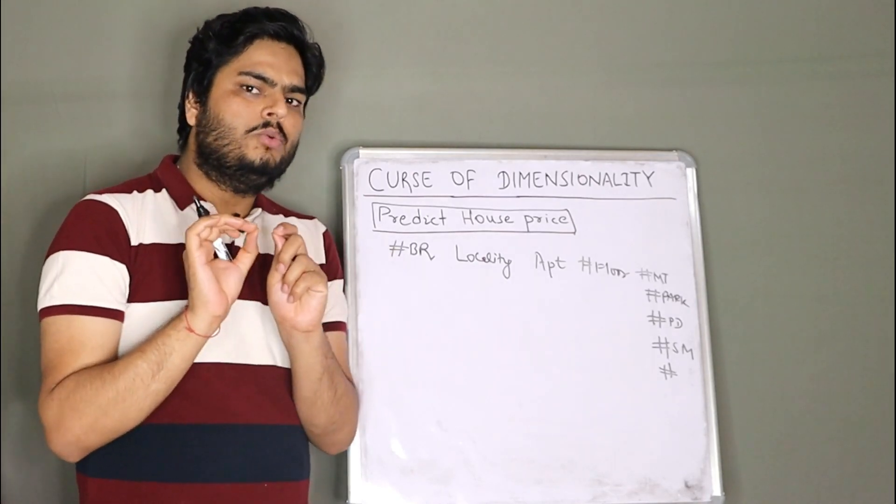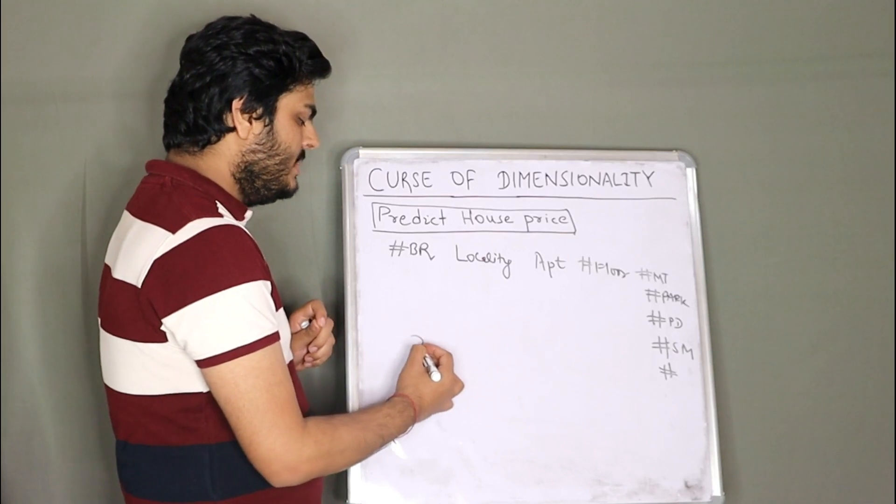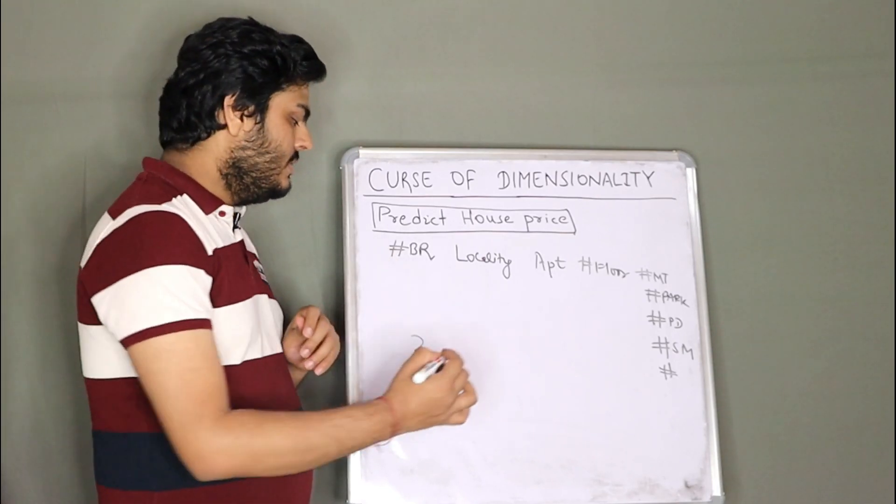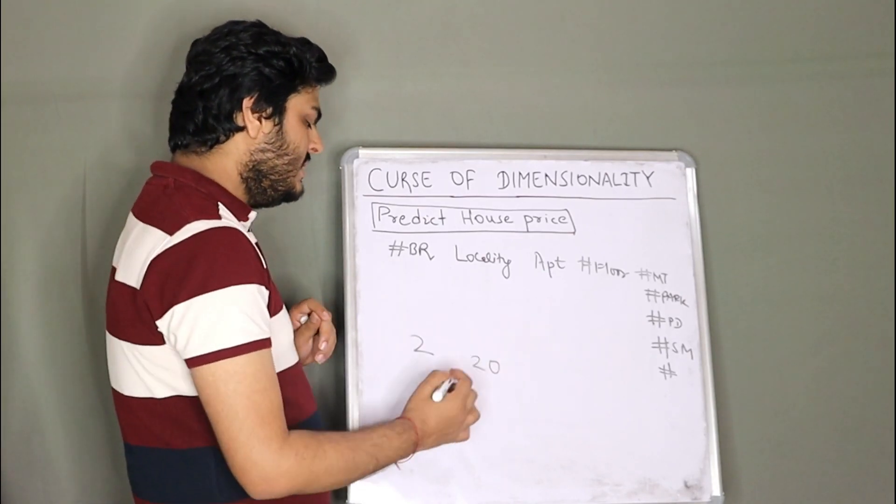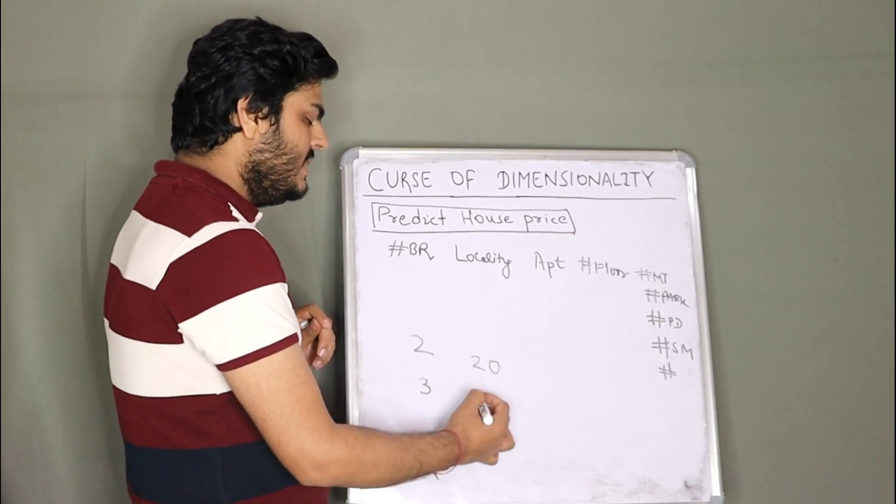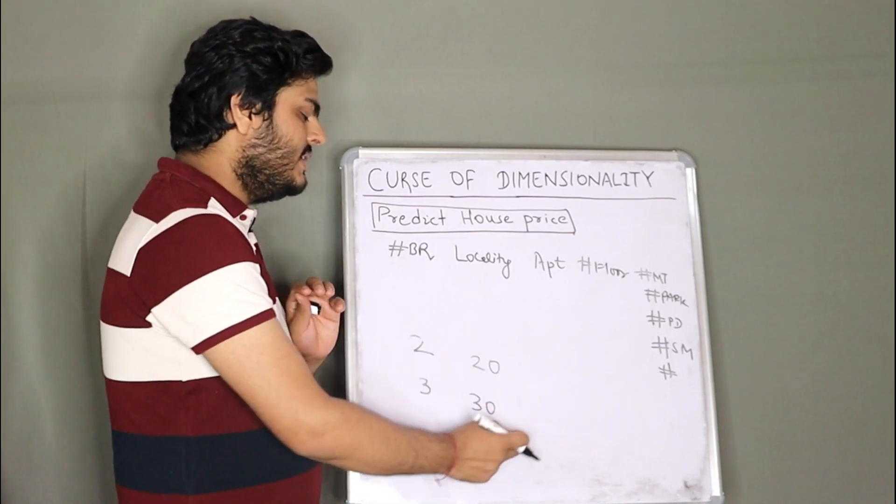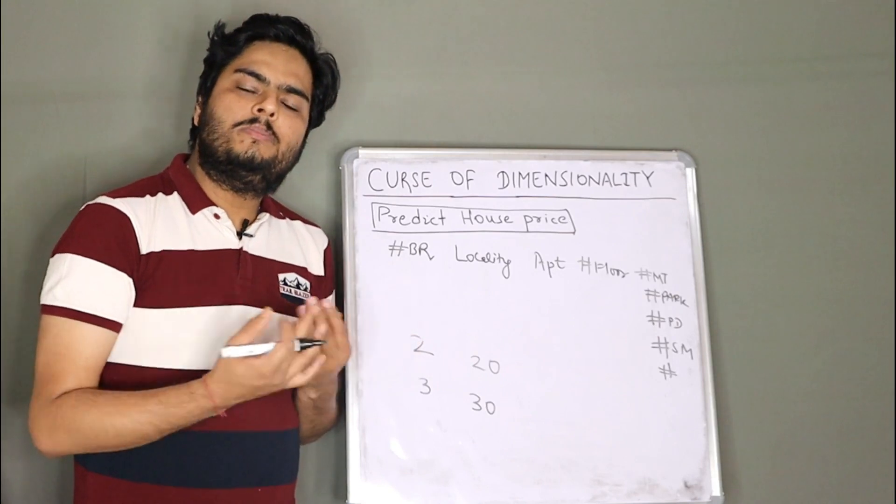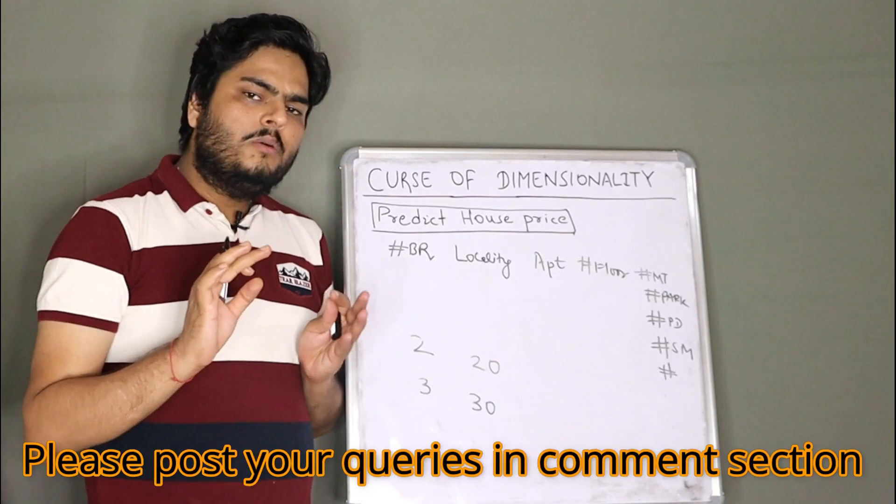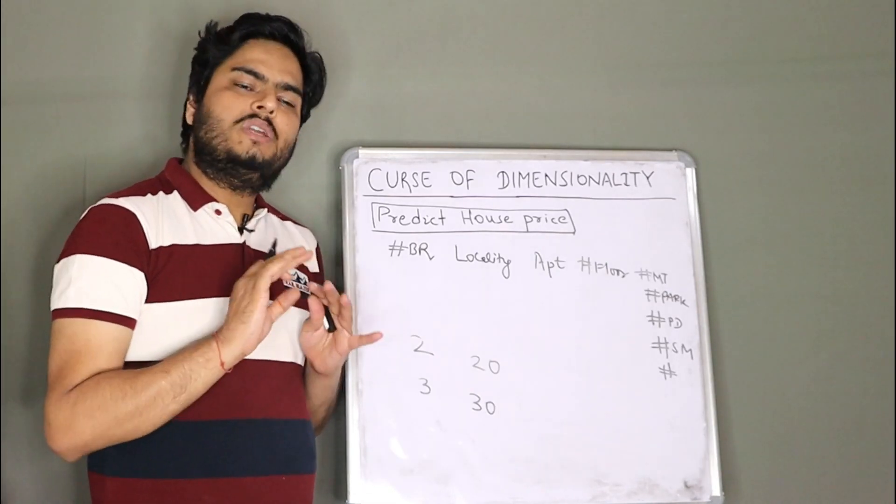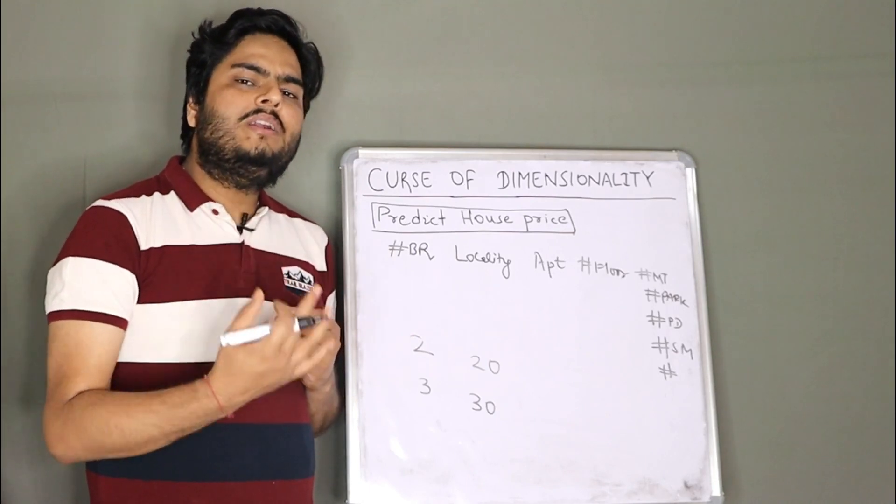For example, if I tell you the price of a two bedroom flat is 20, forget the unit for now. Price of a two bedroom flat is 20. Three bedroom flat is 30. Now this looks like a very simple equation, right? Tomorrow I ask you what is the price of a four bedroom flat. Very simply model can say 40. But normally in machine learning, use cases are not this simple in real world, right?